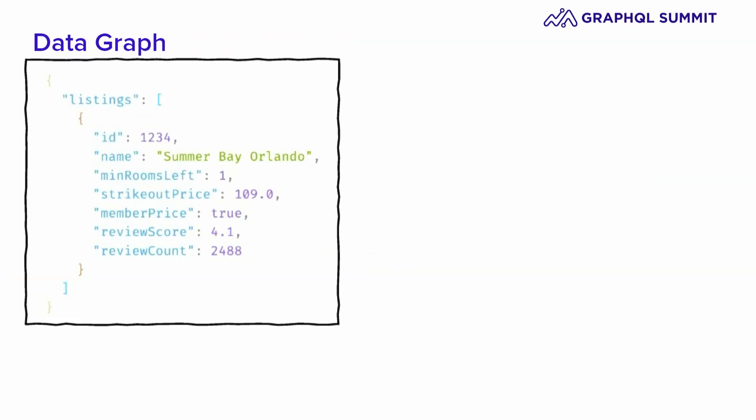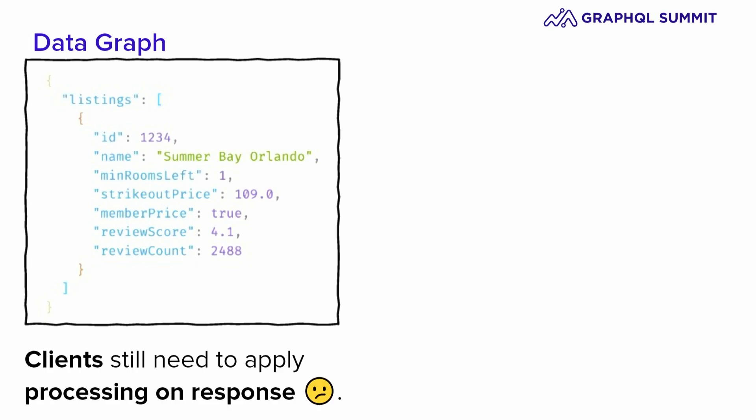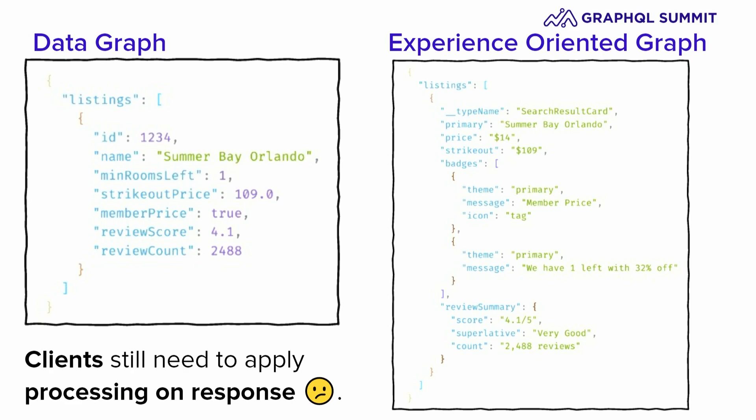This is an example of how a response would look in a data graph. We are getting an ID, a product name, and other data that still needs to be processed on the client side. Clients will have to apply a lot of processing over this response. In an experience-oriented graph, we have a schema that is experience-oriented — we represent UI capabilities.